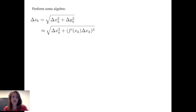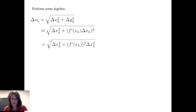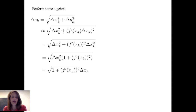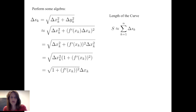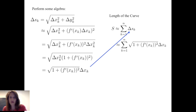So Δs_k ≈ √(Δx_k² + [f′(x_k) · Δx_k]²). There is now a Δx_k² in each term under the radical, and we can factor that out and take its square root, giving Δs_k ≈ √(1 + [f′(x_k)]²) · Δx_k. Knowing this is true for each piece, I can sum these pieces to approximate the total arc length: s ≈ Σ_{k=1}^{n} √(1 + [f′(x_k)]²) Δx_k.